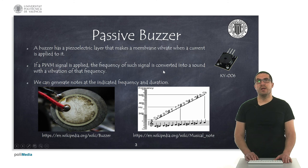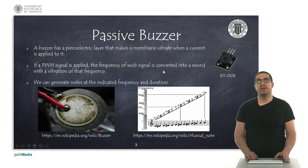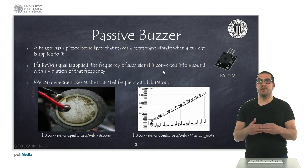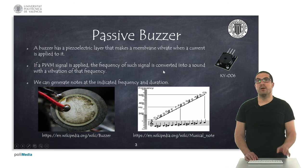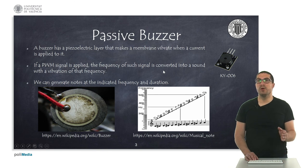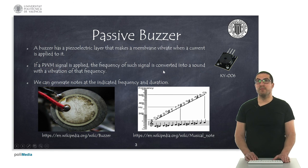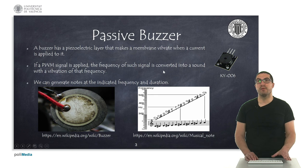The passive buzzer is a special kind of material — it's a piezoelectric layer that makes the membrane vibrate when we apply a current to it. So if we apply a PWM signal with a specific frequency, this generates a vibration which is converted to a sound at that specific frequency. With this kind of device we can easily generate tones or notes at a specific frequency and duration. Here you can also see the KY006, a module typically used in many projects for generating sound. Do not confuse it with an active buzzer, because with the active buzzer you cannot control the frequency — it simply generates a beep.